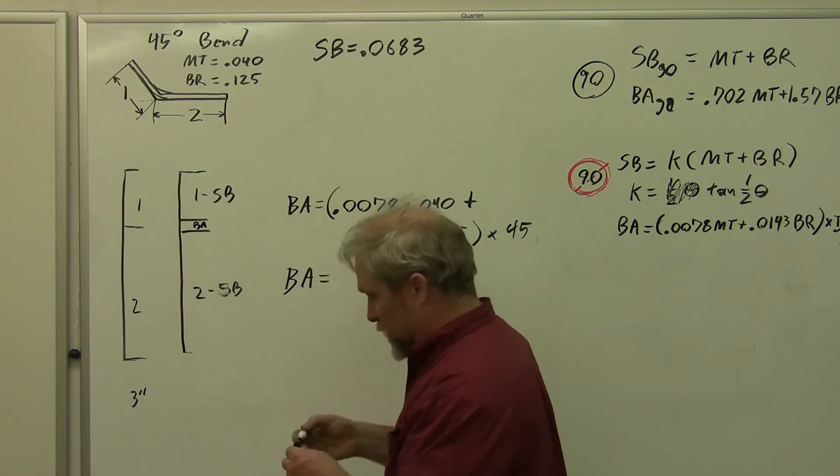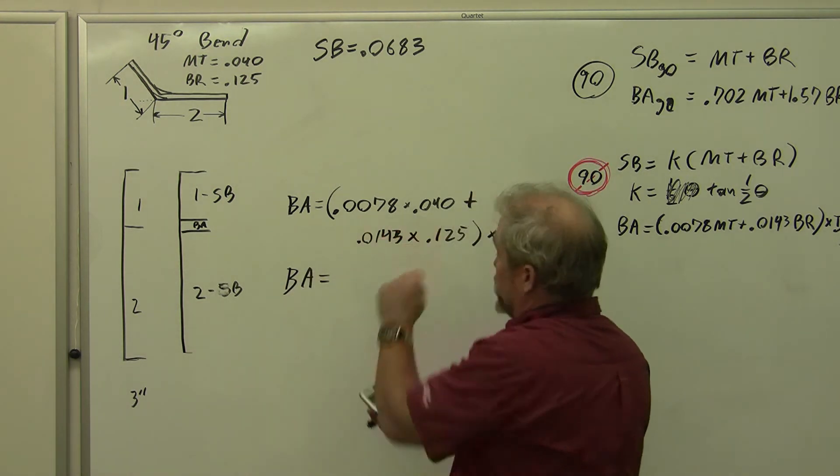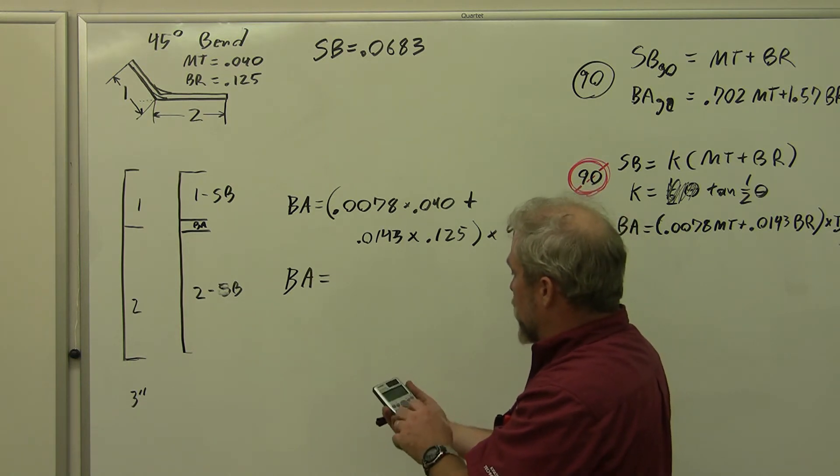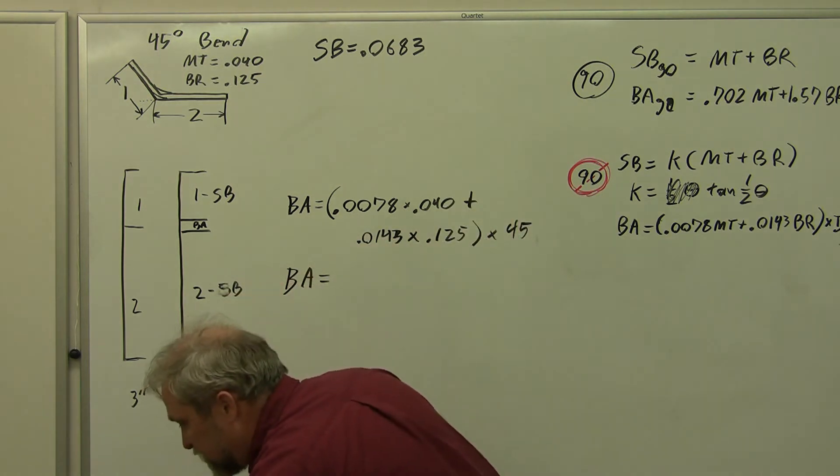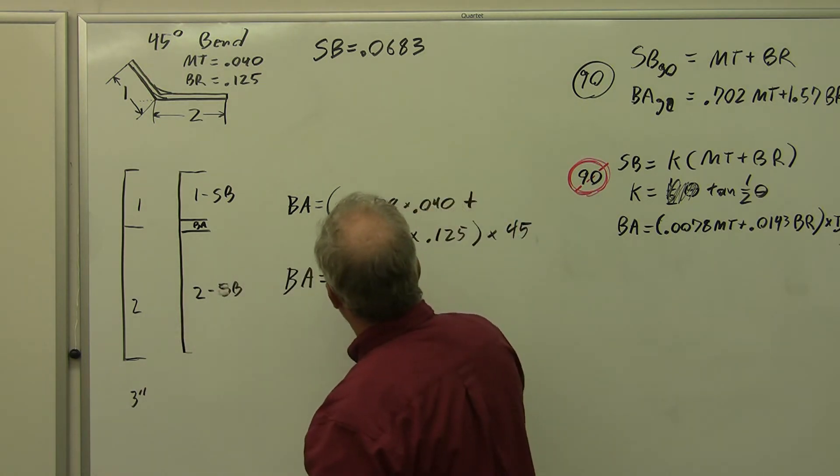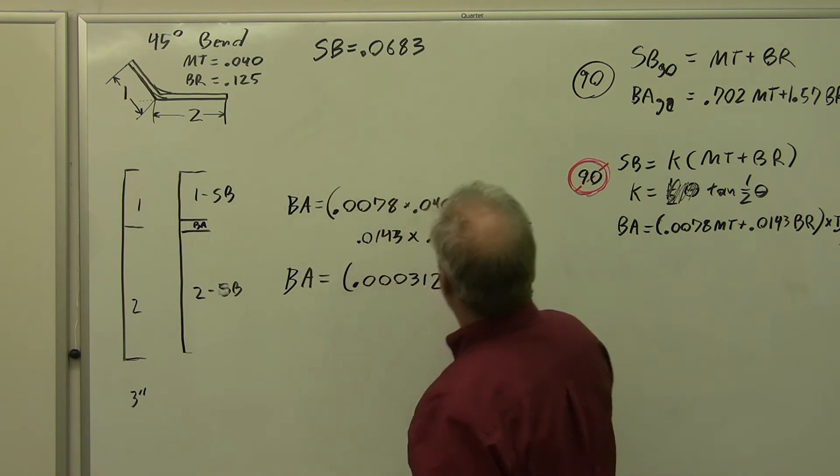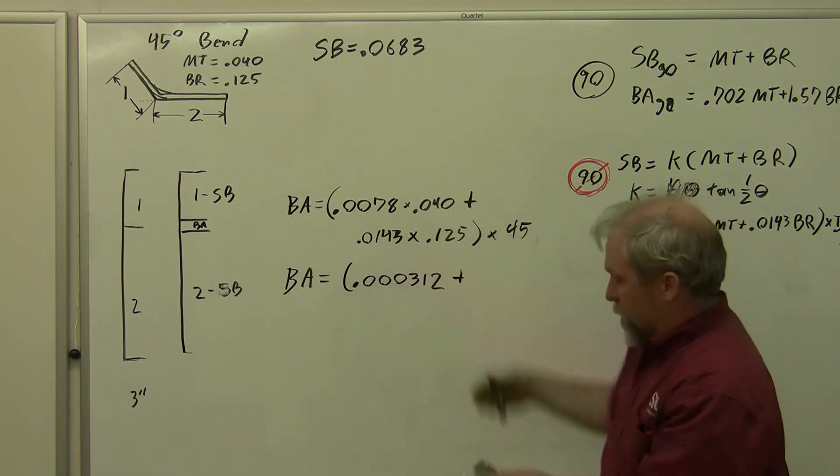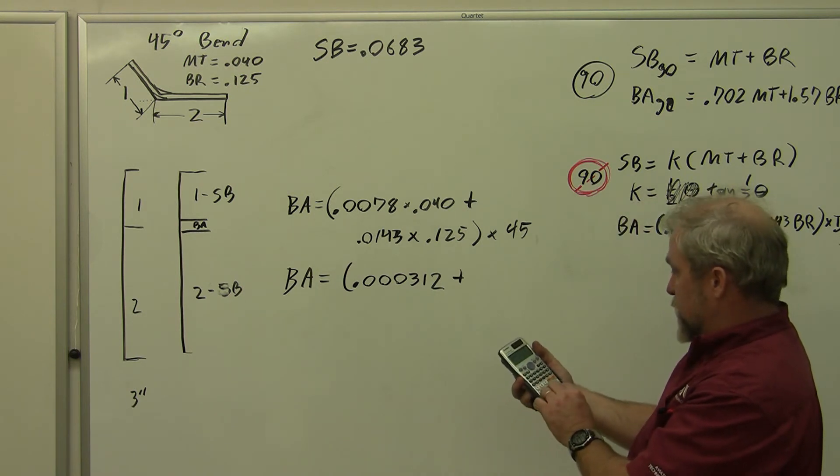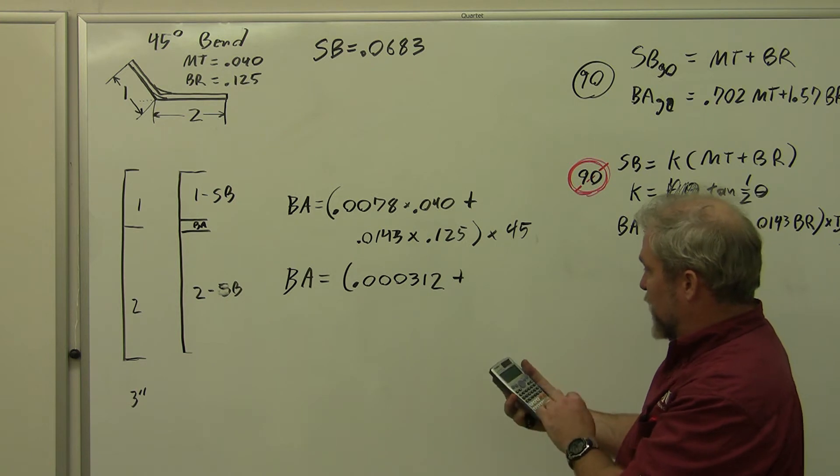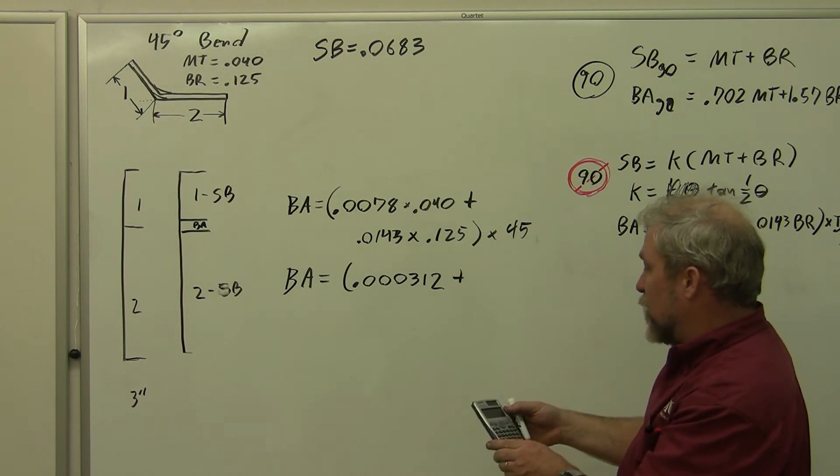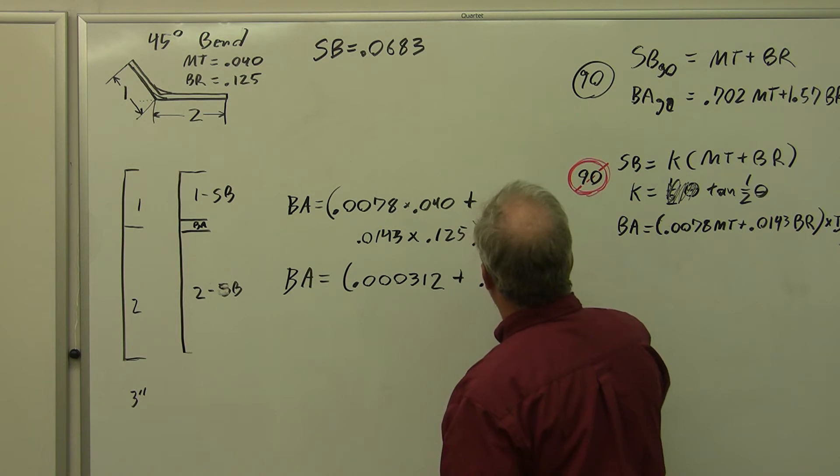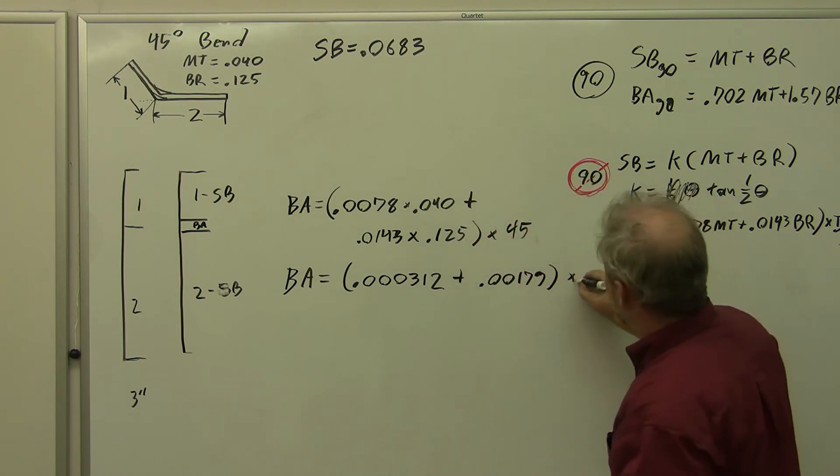Bend allowance equals, this is going to be a very tiny amount because we're multiplying two small numbers. 0.0078 times 0.04 gives me 0.000312 plus my next term. My next term is 0.0143 times 0.125. And that's another little bitty term, but it's not quite as little. 0.00179. All of that times 45.